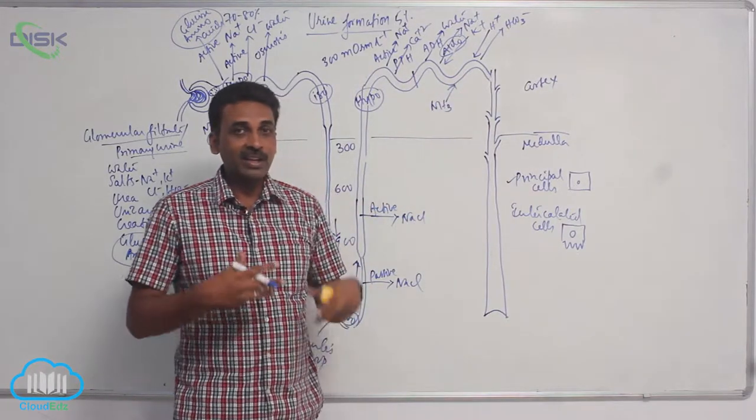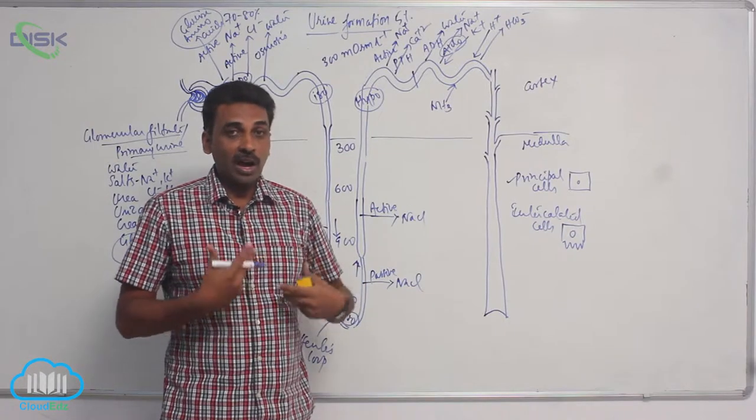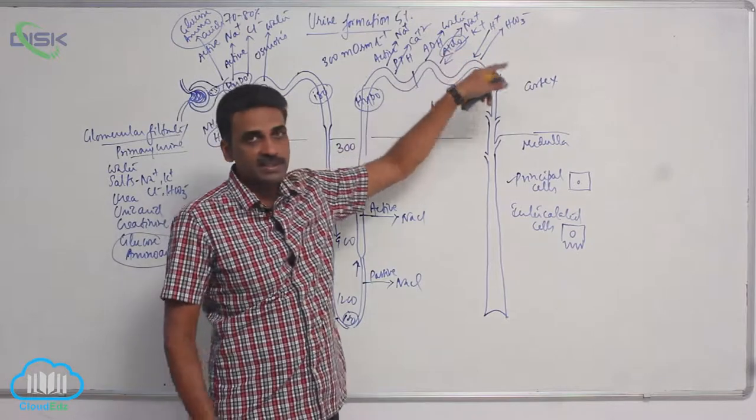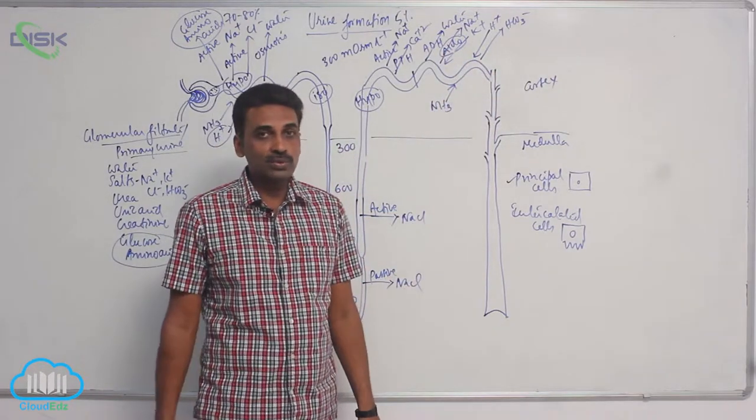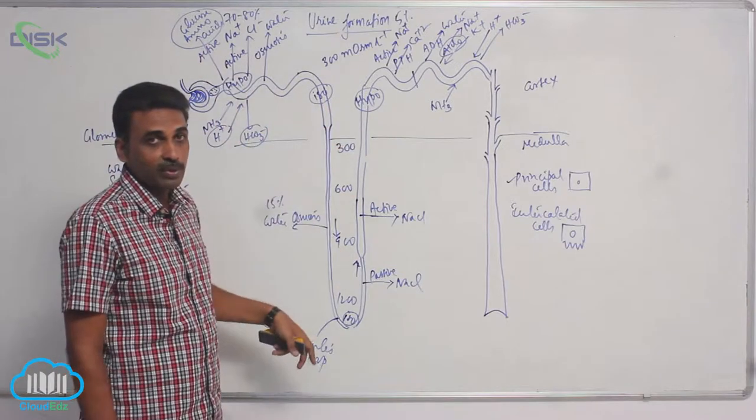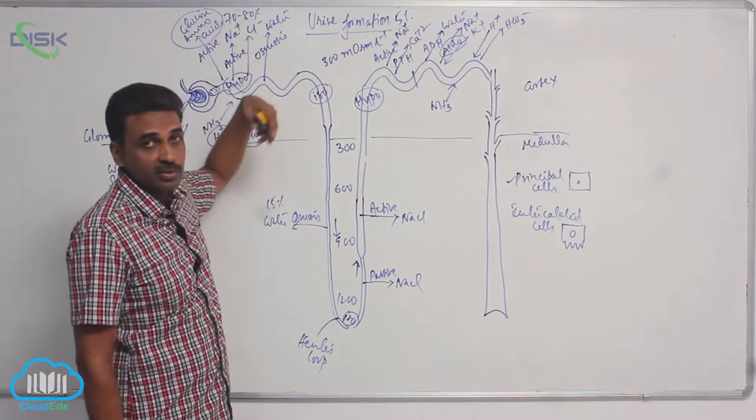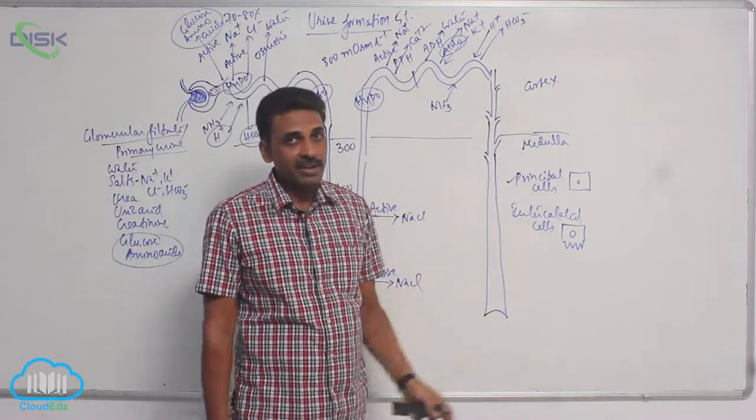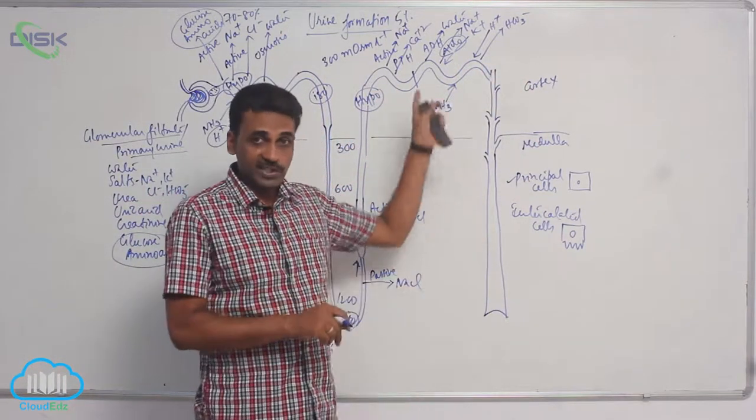In this area—the distal convoluted tubule and collecting duct—transport depends upon our body requirements, so this is hormone-dependent. Earlier in the nephron, it was obligate water transport depending upon sodium chloride present outside, but here it is controlled by hormones.